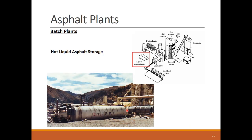The asphalt cement or binder is stored in hot liquid storage tanks that keep the asphalt at the required temperature. The tank temperature is maintained using a direct fire heater that adjusts the temperature for every unique asphalt grade. Typically, the storage temperature is kept at 275 degrees Fahrenheit for soft asphalts like PG 52-34, and 330 degrees Fahrenheit for hard asphalts like PG 70-22.